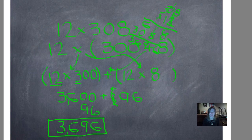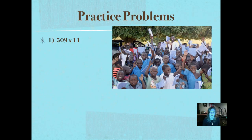That's terribly messy in my problem, but at least I checked it so I know it's right. Number 1: 509 times 11. Pause it, push play when you're ready, and when you're ready we'll check your answer. Make sure you use the distributive property — we know you know how to multiply, we want to know if you can use the distributive property.